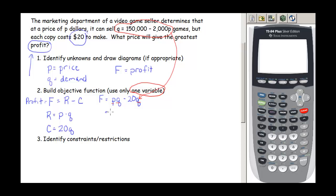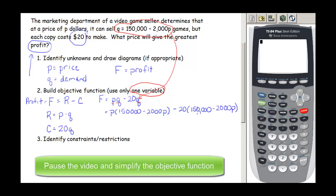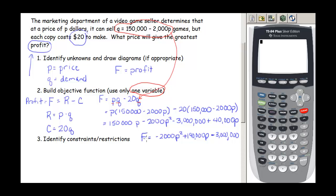So we're going to have P times 150,000 minus 2,000P minus 20 times that 150,000 minus 2,000P. So pause the video for a second and go through the process of simplifying this. Here we have our profit function: it's negative 2,000P squared plus 190,000P minus 3 million.